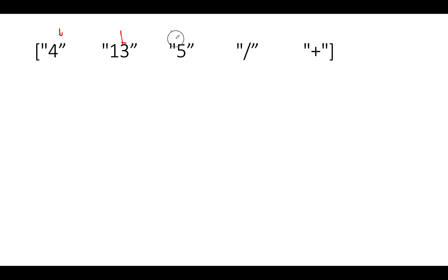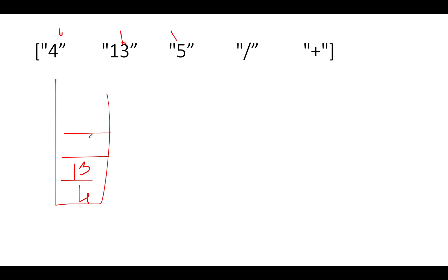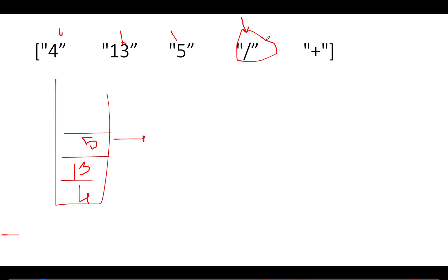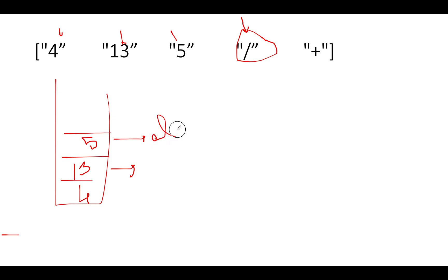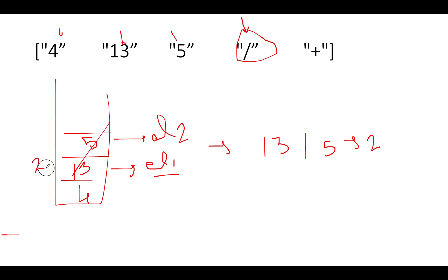Let's evaluate a slightly longer expression: [4, 13, 5, /, +]. We push four, 13, and five — none are operators. Next we have a division operator. Since it's an operator, pull out two elements: the top is element two (five), the lower is element one (13). We perform element one divided by element two: 13 divided by five equals two. We push two onto the stack.